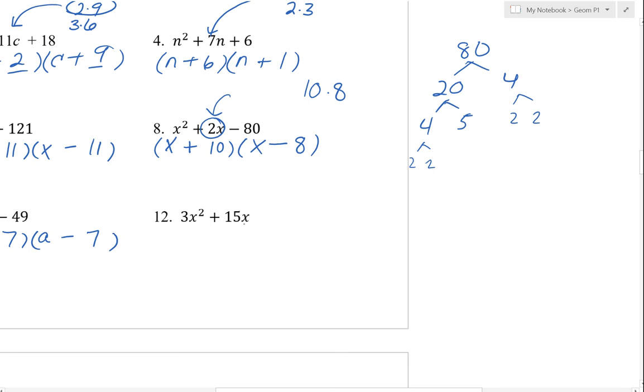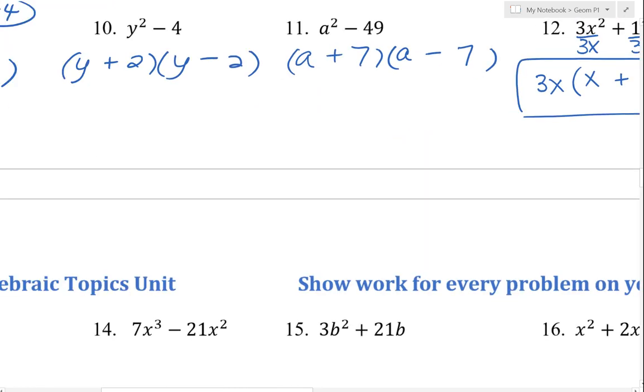So here we only have two terms, but they're not perfect squares. Instead, what we have here is we can factor out a GCF. And so what we can take out of the 3 and the 15 is a 3, and what we can take from the x squared and the x is a 3x. So we're going to go ahead and factor that out. To determine what goes inside the parentheses, divide these by 3x. All right, that's all you can do.